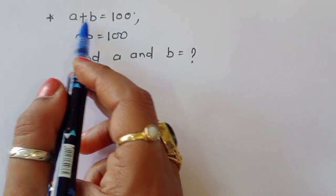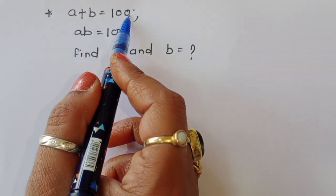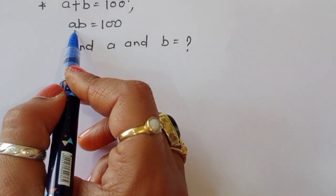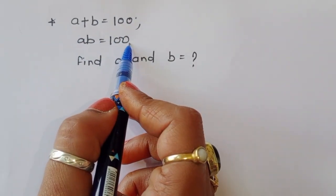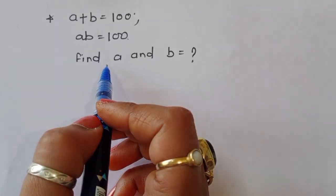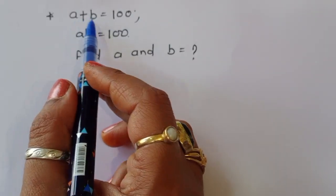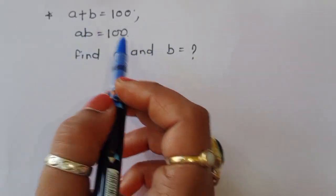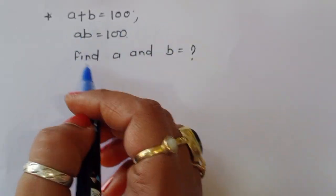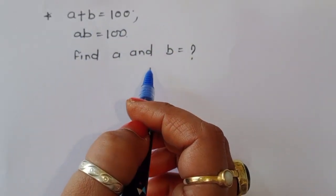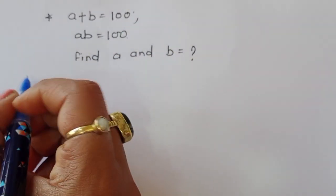The question is: given a plus b is equal to 100 and ab is equal to 100, we have to find out the value of a and b. Let's see the solution.